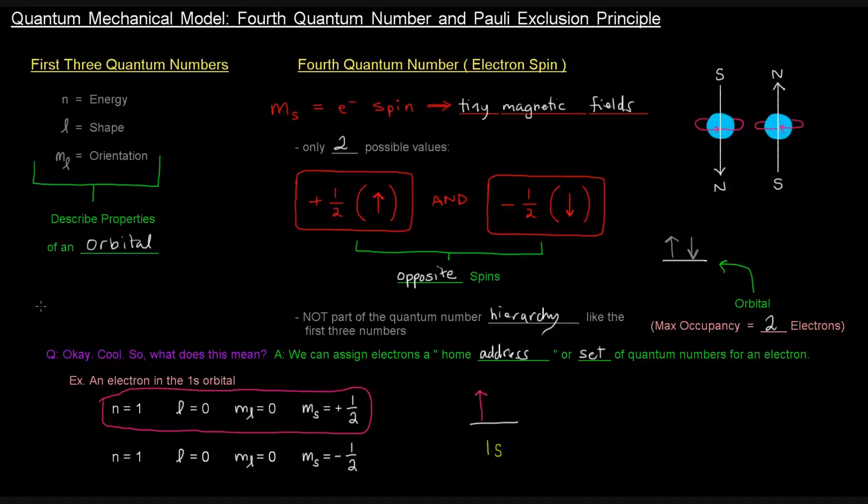We could have another one in blue, this home address, which has all the numbers the same, except m sub s is negative 1 half. That describes, that's the home address for this electron.